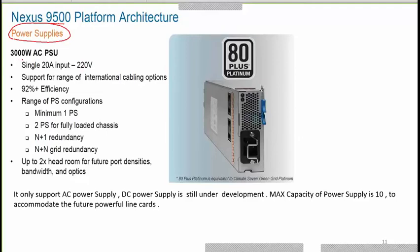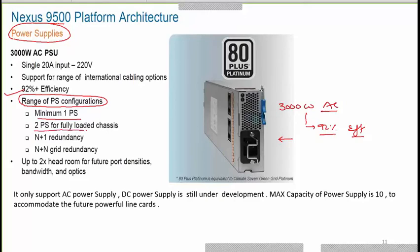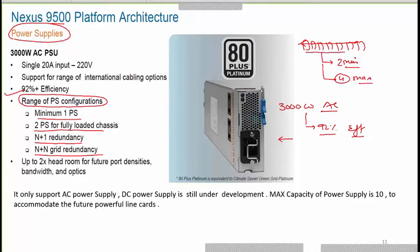In the Nexus 9500, each power supply provides 3000 watts on AC supply with up to 92% efficiency. Power supply configurations include minimum one, two for a fully loaded chassis, with N+1 or grid redundancy options. There are a total of 10 power supply slots in the chassis; minimum two are required to start the chassis, and four is the maximum for a fully loaded system.